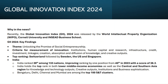Another index released in 2024 is the Global Innovation Index, or GII 2024, jointly released by WIPO — World Intellectual Property Organization — along with Cornell University and INSEAD Business School. The theme of this year's index is 'Unlocking the Promise of Social Entrepreneurship.' Criteria for ranking include institutions, human capital, research infrastructure, credit and investment, knowledge linkages, and creative outputs.